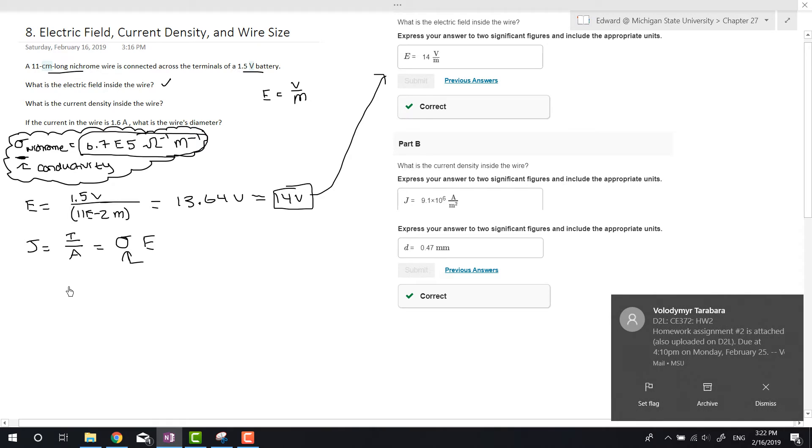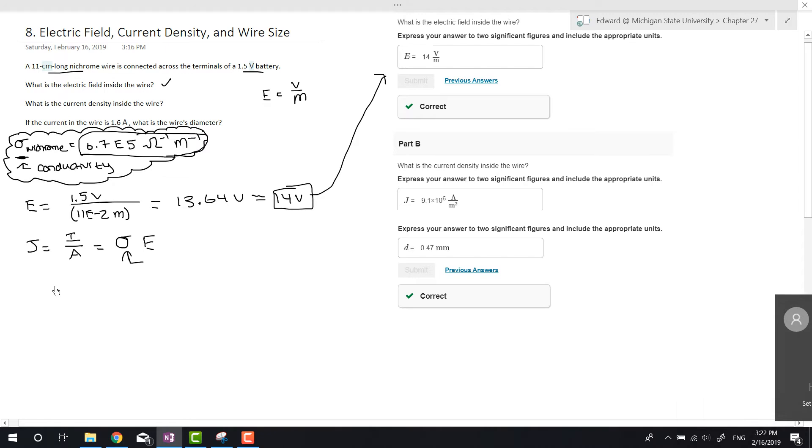So sigma is what I wrote up there: 6.7×10^5 inverse ohm-meters. Since 1 ohm is 1 volt over amp, inverse ohm is amps over volt. So it's amps over volt times 1 over meter.